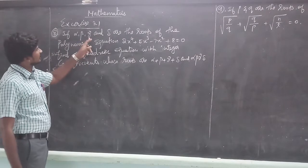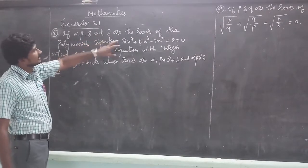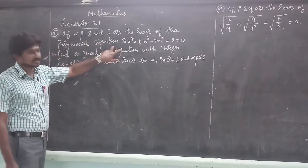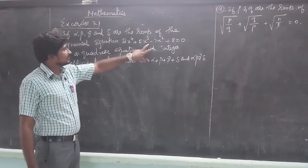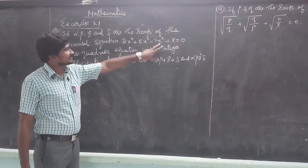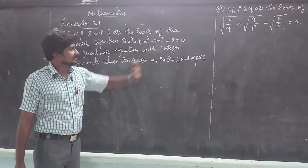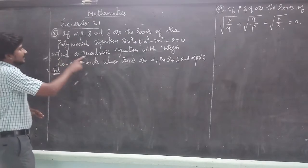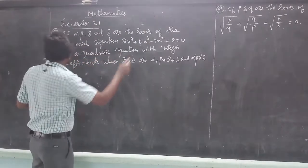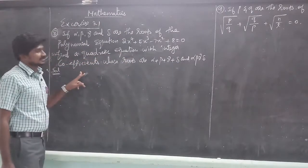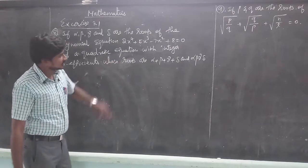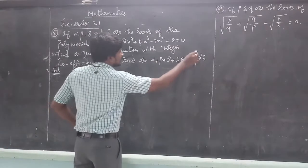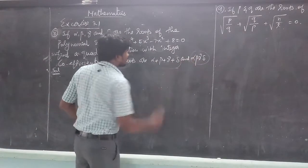Alpha, Beta, Gamma, and Delta are the roots of the polynomial equation 2x⁴ + 5x³ - 7x² + 8 = 0. Find the quadratic equation with integer coefficients whose roots are alpha plus beta plus gamma plus delta, and alpha times beta times gamma times delta.